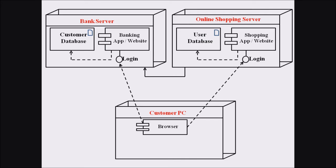In the banking server or banking app, there is also a customer database artifact where all the customer's transaction details, login passwords, credit and debit transactions, and current account balance are saved. In the case of the Customer PC, it may have files, cookies, or history artifacts where online details are saved — and this is an artifact on the side of the Customer PC.